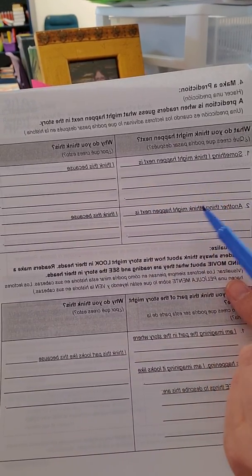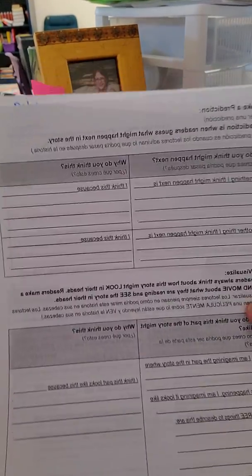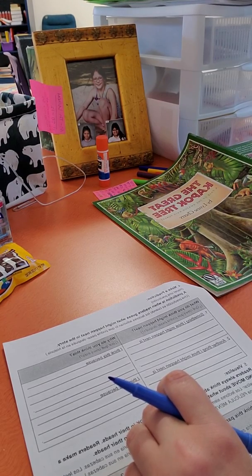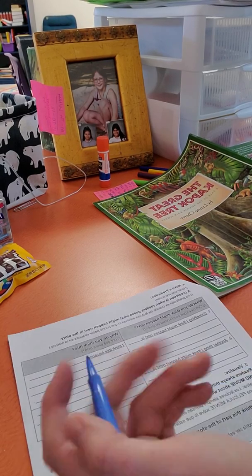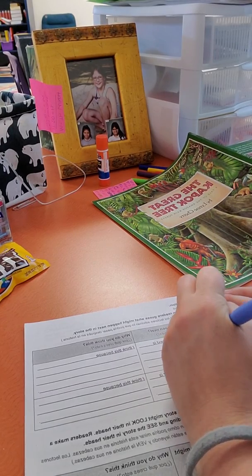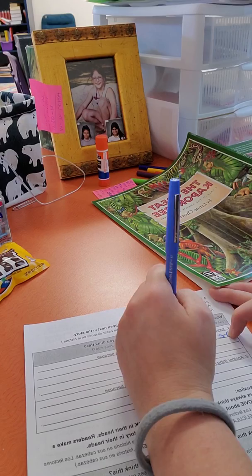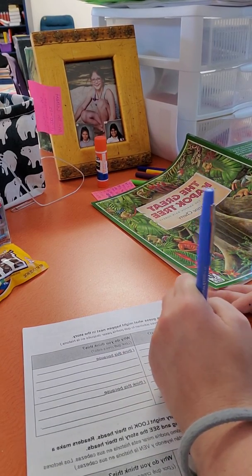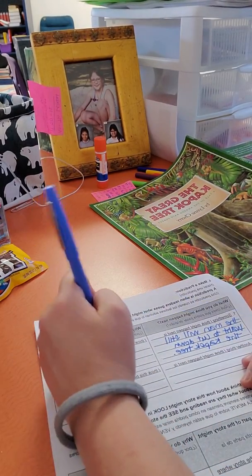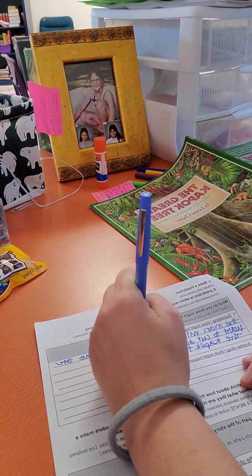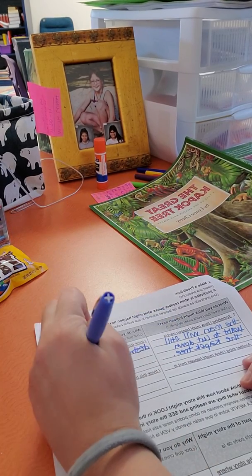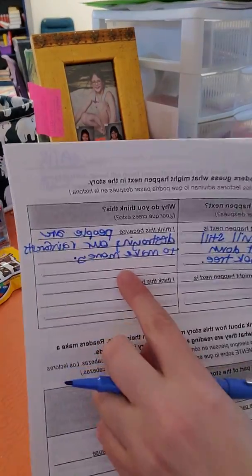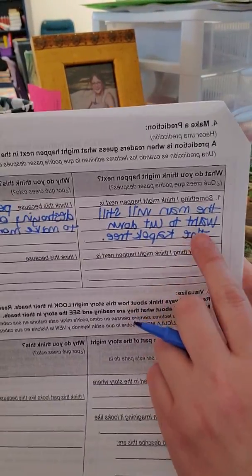So remember, these two things cannot match because that would be kind of silly to have two separate things be the same. So make sure you're coming up with two different things. So something I think might happen next is, what do I think might happen next? I think that the man will still want to cut down the kapok tree. I think this because people are destroying our rainforests to make money. That's something that I know in my brain, and I'm using that to justify my reason.